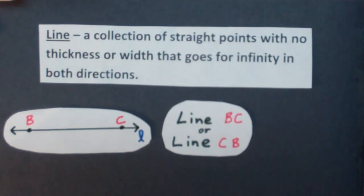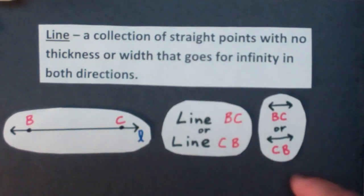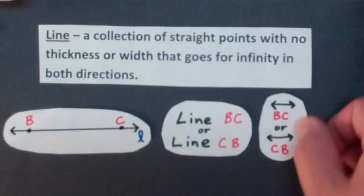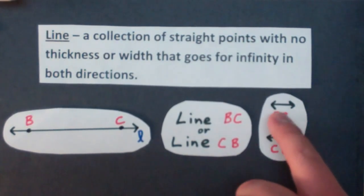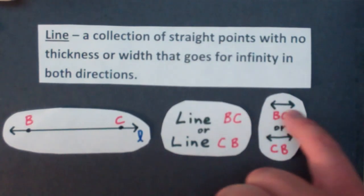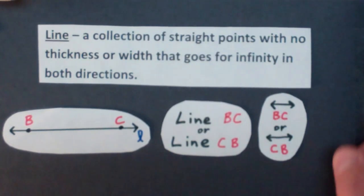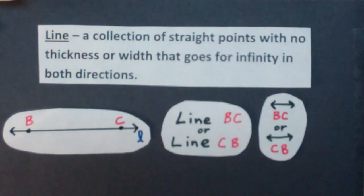There's another way of writing this down, which I prefer, is just a symbol of a line above two points. Now, notice this symbol has an arrow going both directions. So there's two arrows here. You need to have two arrows, otherwise it means something completely different.